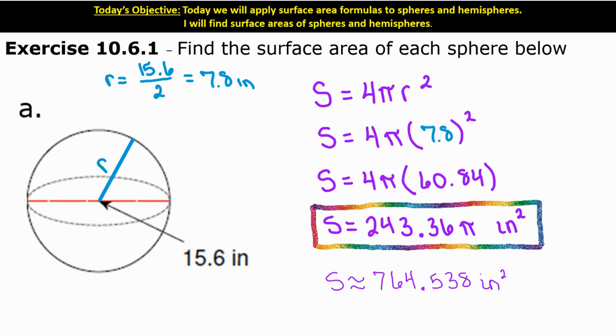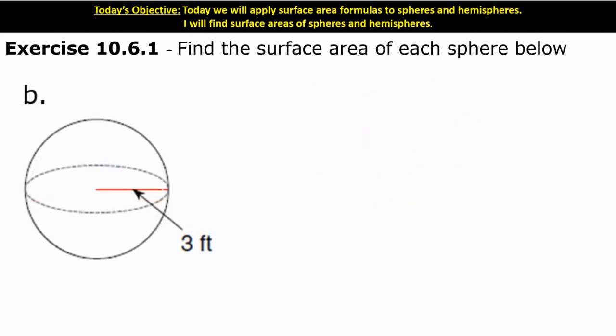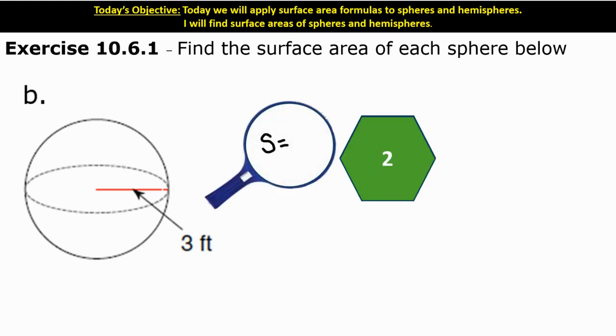Alright, let's try another one. Let's look at b. For b, I can see they gave me the radius of 3. I want to find the surface area of the sphere. You have two minutes to try this on your own.